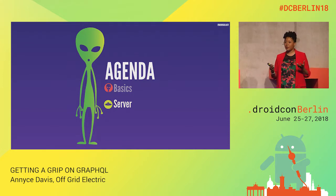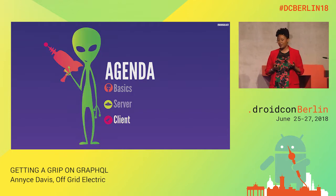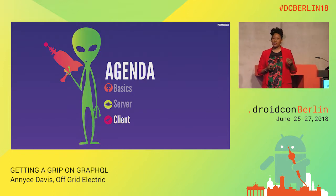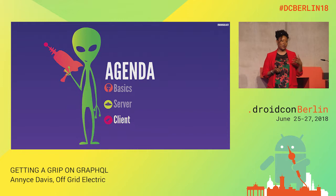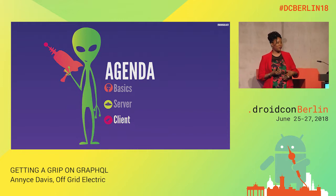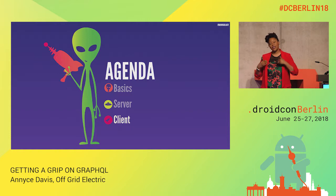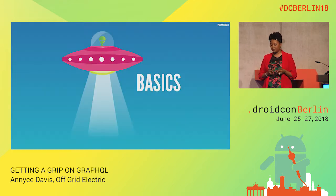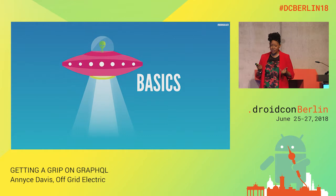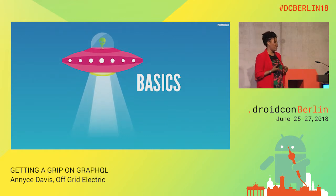Next we're going to talk about GraphQL servers — what they're made up of and how you can write one in Kotlin. And then finally we're going to look at a GraphQL client. This is what we use to talk to our GraphQL server, and since I'm an Android developer, we're going to look at an Android implementation.